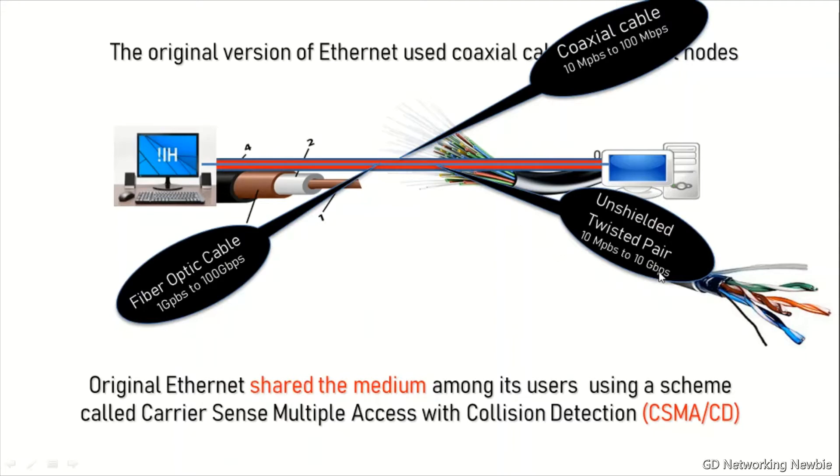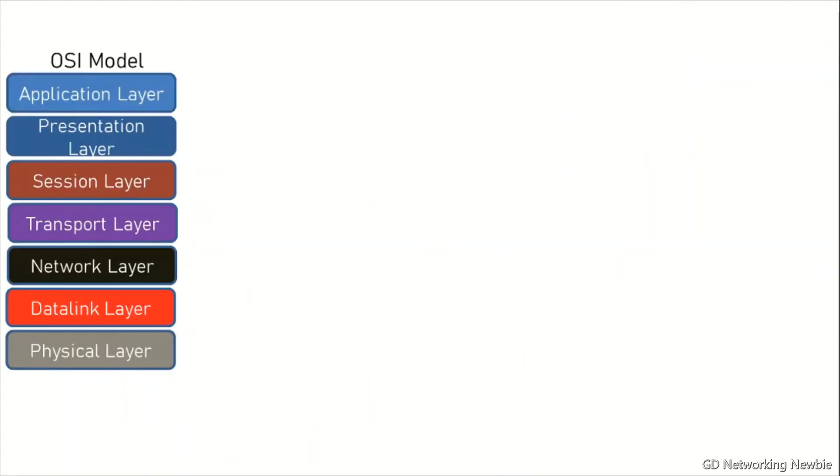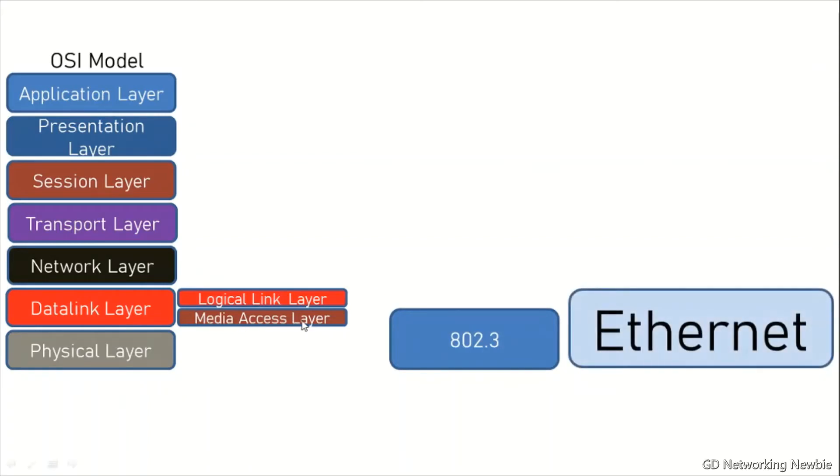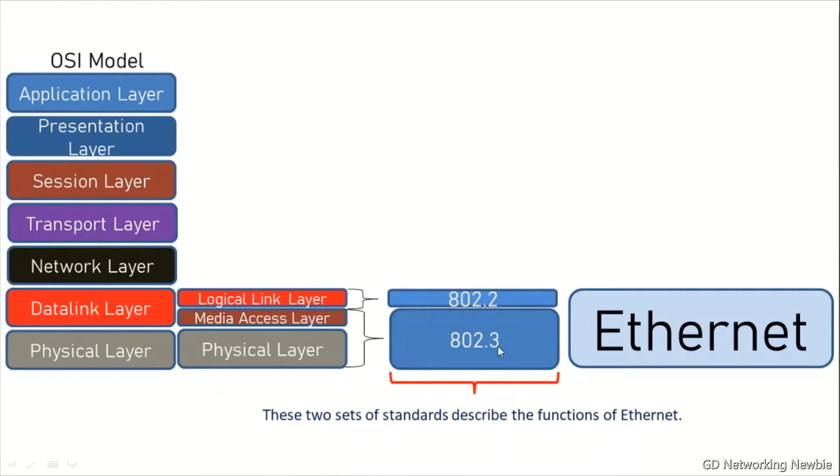Let's compare and relate Ethernet with the OSI reference model, where the data link layer has been divided into two parts. The first part is called logical link layer and the second part is called the media access layer. 802.3 part of Ethernet covers this media access layer and the physical layer, and the logical link layer is covered by 802.2 part of Ethernet. These two standards together describe the function of Ethernet.